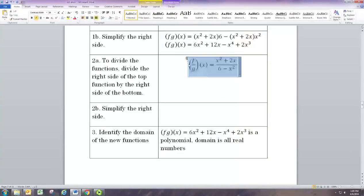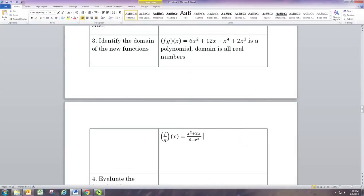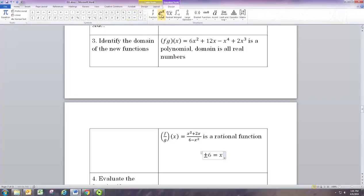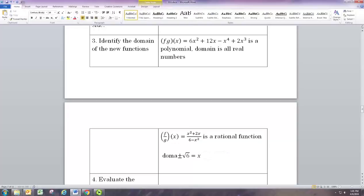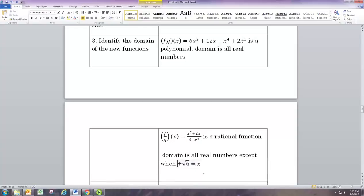But what about this one? This is now a rational function. And we know that those don't always have a domain of all real numbers. The numbers not in the domain are where we get division by zero. And that would happen when x squared is equal to 6. If that's 0 that happens when x squared equals 6. And if you take the square root of both sides, it's when x is plus or minus square root of 6.